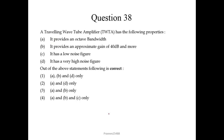Question number 38: a traveling wave tube amplifier has the following properties. It provides an octave bandwidth — correct. It provides an approximate gain of 40 dB and more — correct. It has a low noise figure — correct. It has a very high noise figure — wrong. So A, B, and C are the correct statements; the fourth option is our correct answer.